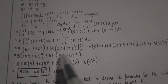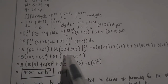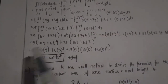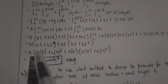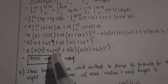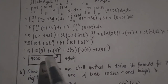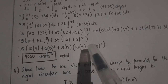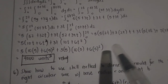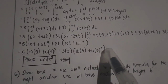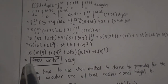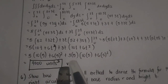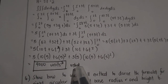Now we evaluate at t equals 5. We get 5 times the quantity (10 times 5 plus 6 times 5 squared) plus 3 times 5 times the quantity (10 times 5 plus 6 times 5 squared). Solving this gives us 4,000 cubic units, which is the final answer for problem number 5.